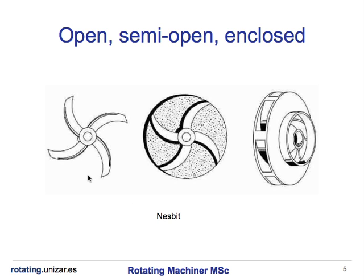If we look at whether the impellers have lids or not, we can classify the impellers as open, semi-open, or enclosed. The open impeller consists only of blades attached to a hub. It resembles a propeller. This impeller has low efficiency but it must be used when it is necessary to clean the impeller and when there is risk of blocking.